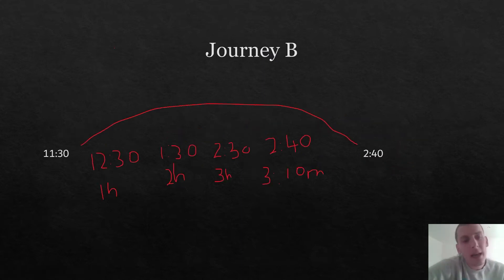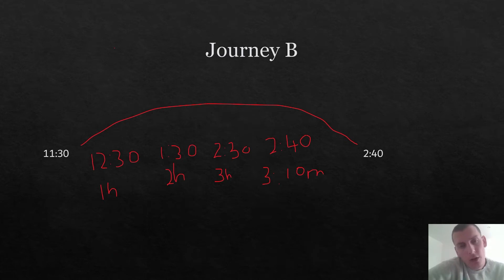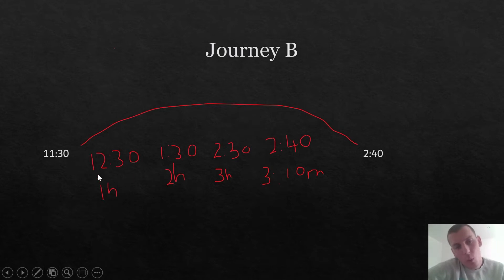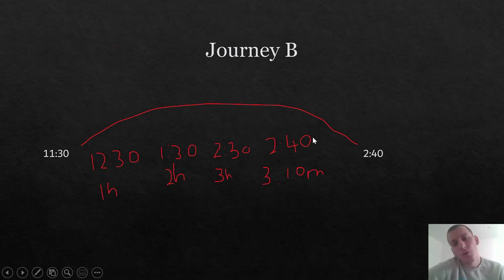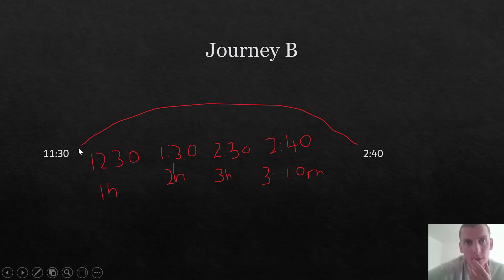Now we're going to do journey B. Journey B went from 11:30 to 2:40. We do exactly the same thing — go up in hours: 11:30 plus one hour is 12:30, then 1:30, then 2:30 — that's three hours. We're at 2:30 and we want 2:40. Adding another hour would be 3:30, which is too much. The difference between 2:30 and 2:40 is 10 minutes. So the difference between 11:30 and 2:40 is three hours and 10 minutes — it takes three hours and 10 minutes to get from London to Newcastle.